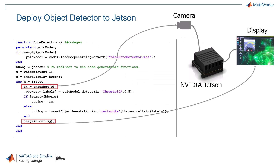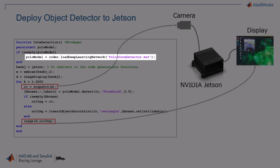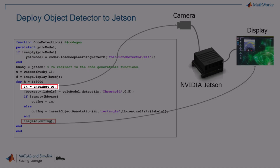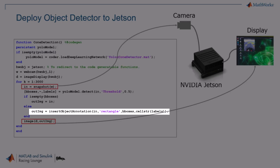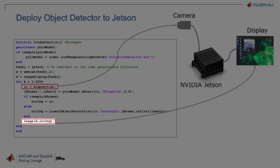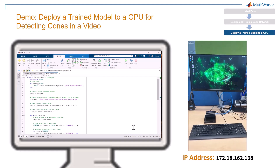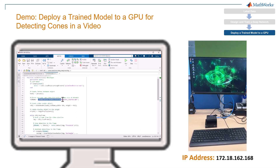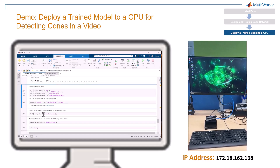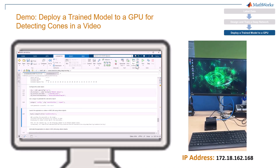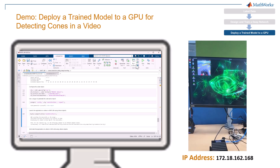Then let us take a look at the cone detection function. It starts by loading a pre-trained YOLOX model and creating a Jetson hardware object. Then it captures images from a camera, detects cones using the YOLOX model, and draws bounding boxes around the detected cones. At last, it displays the annotated image. For this demo, we connected a monitor to the GPU and tested the model using a pre-recorded video from Tongji University, instead of using a camera to capture cones in real-time. Once the application has been deployed, you can run it on the Jetson GPU directly from MATLAB. As you can see, the model can detect most cones in each frame.